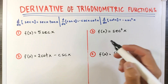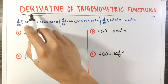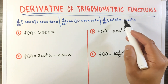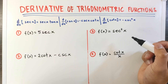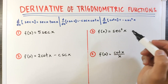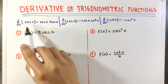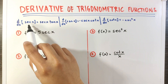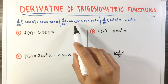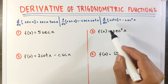This is the continuation of the video about derivatives of trigonometric functions. In this video, I will discuss the derivative of secant x, cosecant x, and cotangent x.